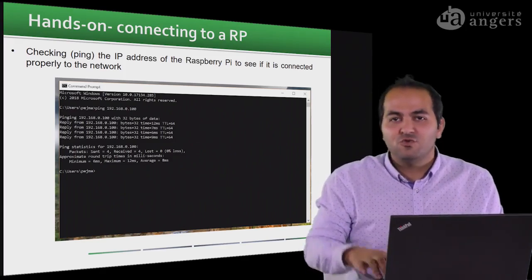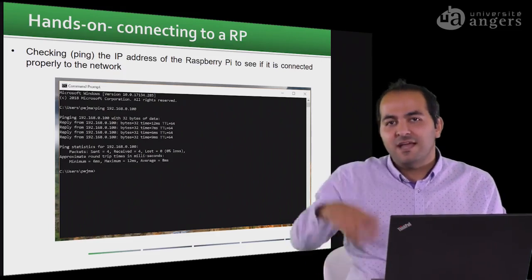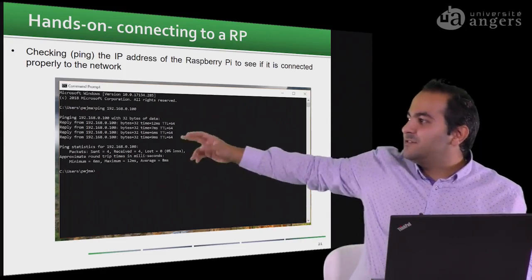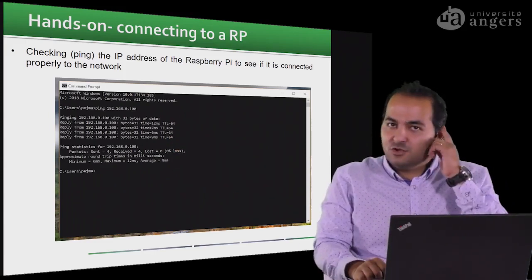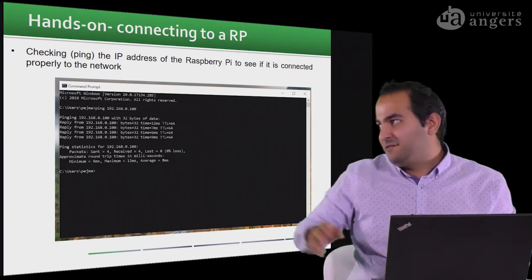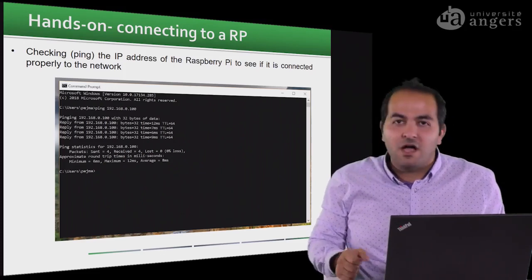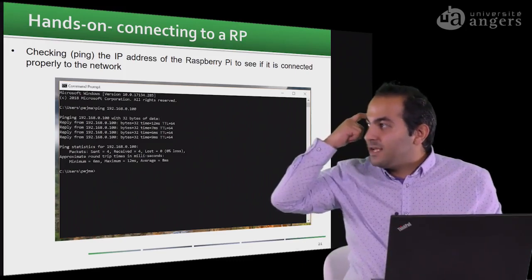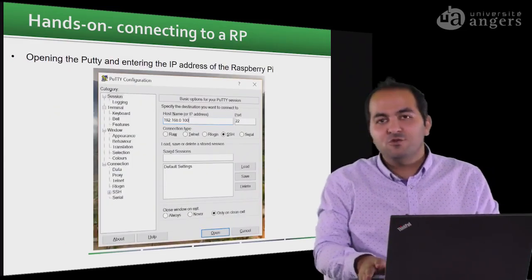First, sitting at your host computer, you should make sure your Raspberry Pi is on the network. If you don't know its IP address, you can type 'arp -a' and it will show all IP addresses on your network. Then you can ping the Raspberry Pi's IP address — if it's available, it will return a reply showing the response time. Once you confirm your Raspberry Pi is on the network and available, you can use PuTTY to connect to it.